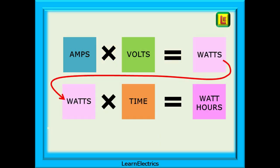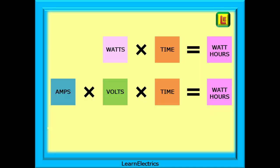Moving on, basic power law tells us that amps times volts equals watts, and watts multiplied by time gives us watt hours. Our household electricity bills are calculated in kilowatt hours — thousands of watt hours. Putting these together: watts multiplied by time equals watt hours. And because amps times volts is watts, we can also say that amps multiplied by volts multiplied by time gives us watt hours.